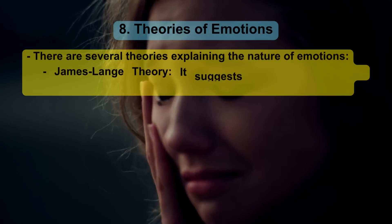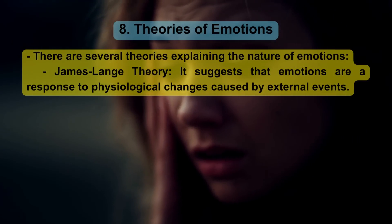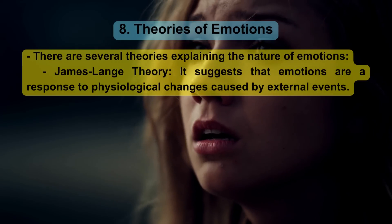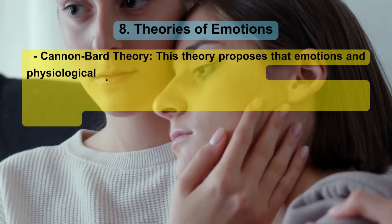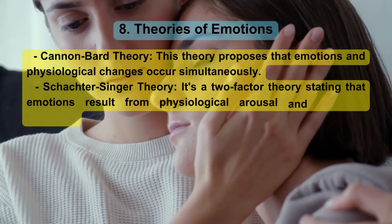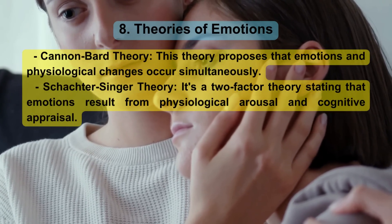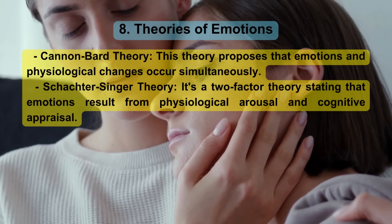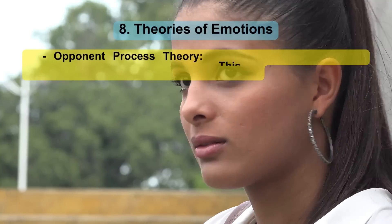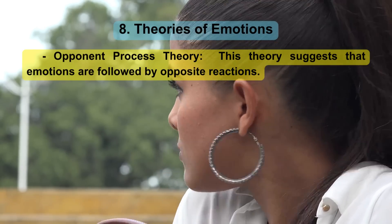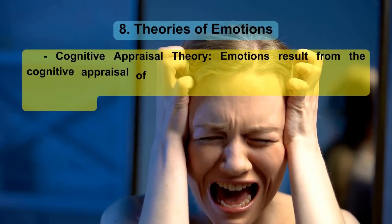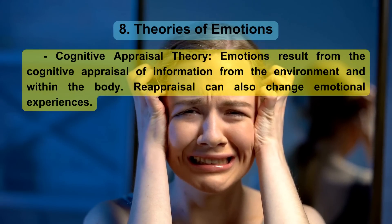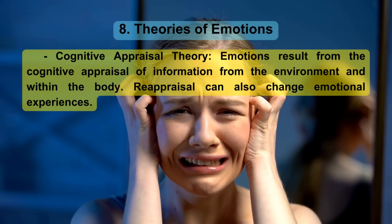Theories of Emotions. There are several theories explaining the nature of emotions. James-Lange theory: it suggests that emotions are a response to physiological changes caused by external events. Cannon-Bard theory: this theory proposes that emotions and physiological changes occur simultaneously. Schachter-Singer theory: a two-factor theory stating that emotions result from physiological arousal and cognitive appraisal. Opponent process theory: this theory suggests that emotions are followed by opposite reactions. Cognitive appraisal theory: emotions result from the cognitive appraisal of information from the environment and within the body; reappraisal can also change emotional experiences.